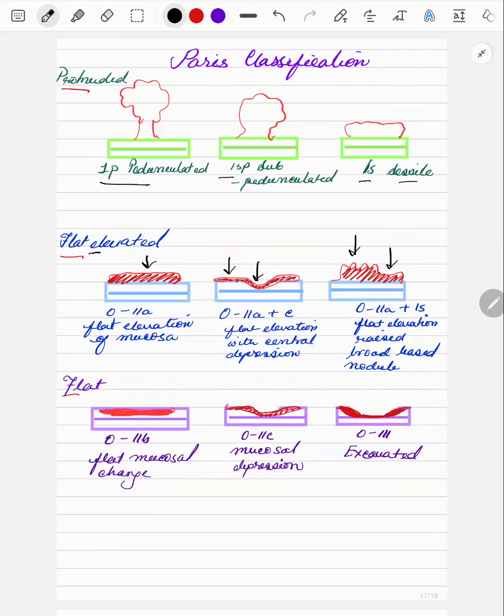Next comes the flat polyp and the flat polyp is basically 02B which is flat mucosal change. So there will be mucosal change and then there will be mucosal depression. So 2C, C stands for depression and 03 which is excavated.